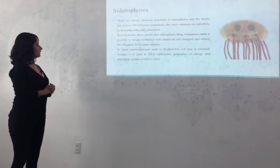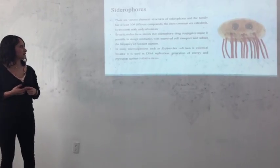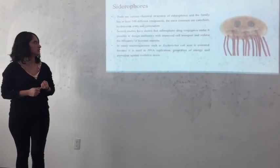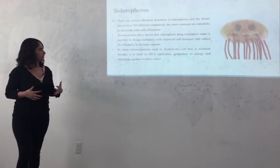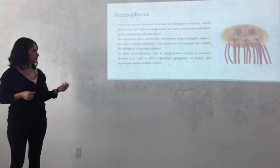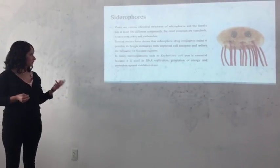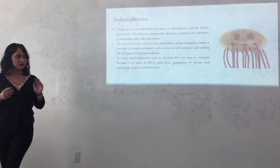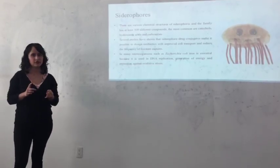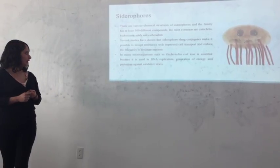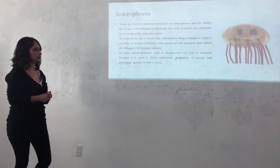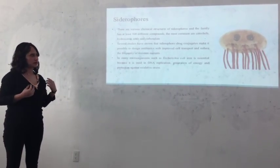There are various chemical structures of siderophores and the family has at least 500 different compounds. The most common are catechols, hydroxamic acids, and carboxylates. Several studies have shown that siderophore drug conjugates make it possible to design antibiotics with improved cell transport and reduce the frequency of resistant mutants. In many microorganisms such as E. coli, iron is essential because it is used in DNA replication, production of energy, and protection against oxidative stress. We chose E. coli for our model organism because it grows very quickly and produces siderophores naturally.